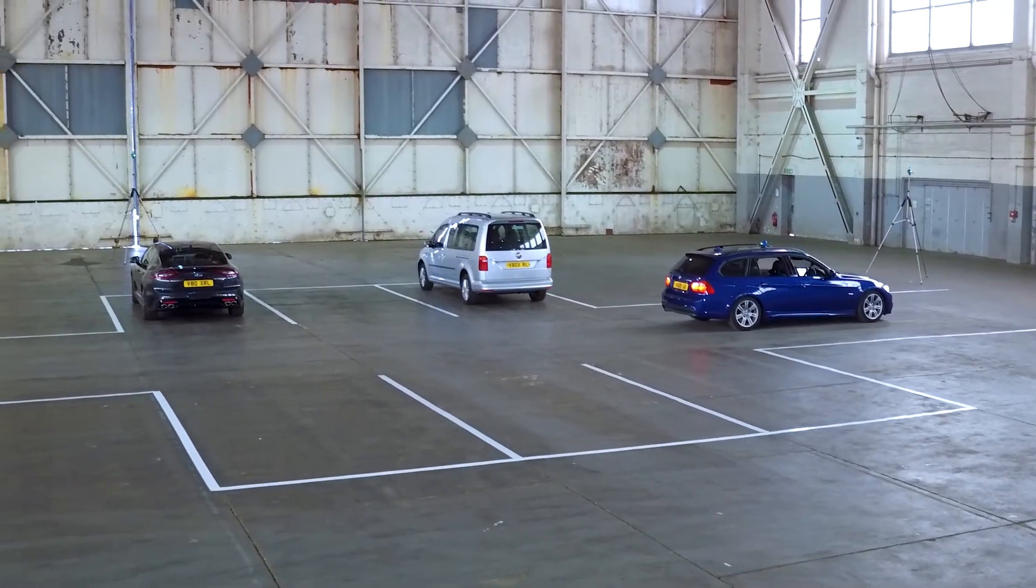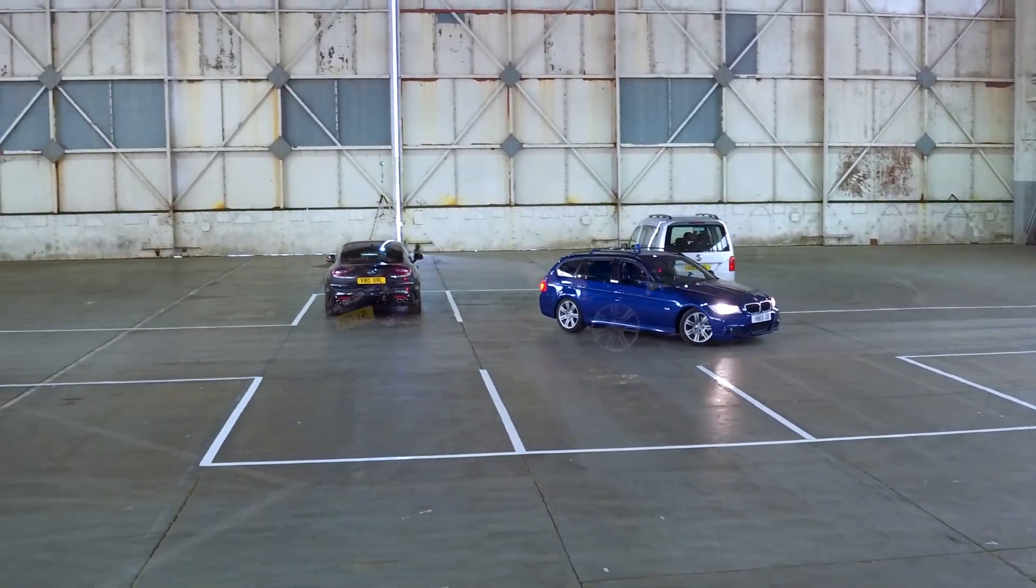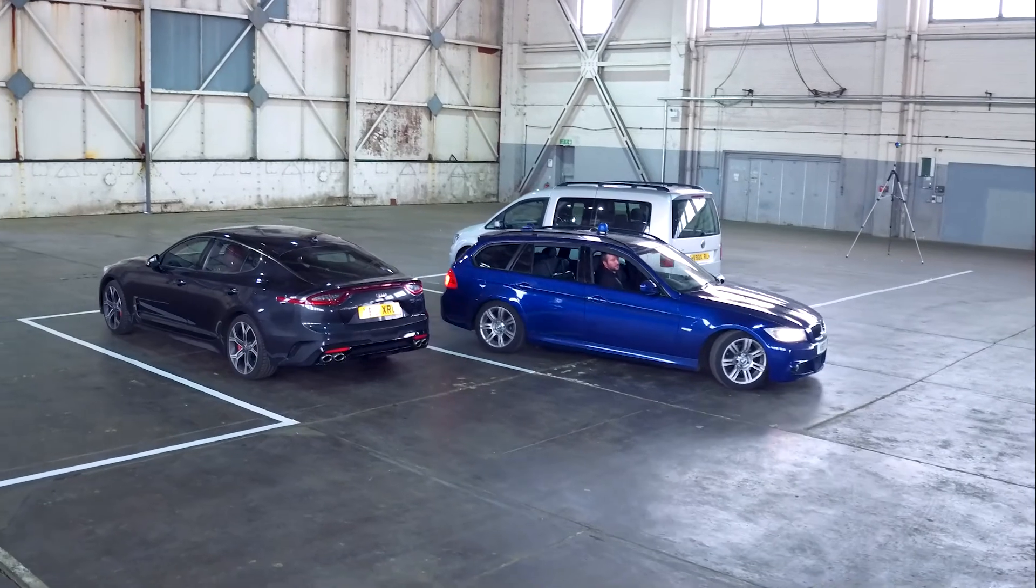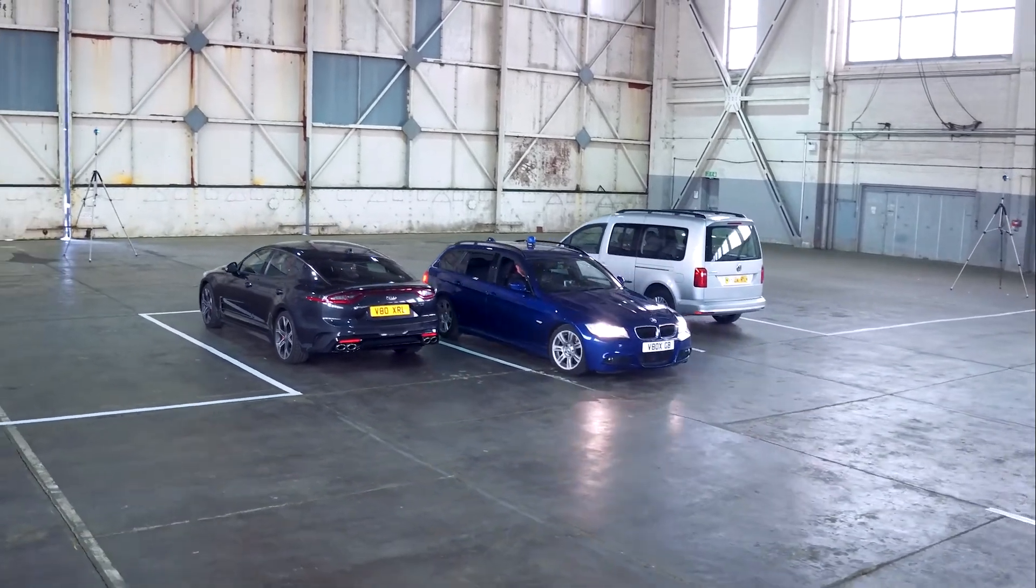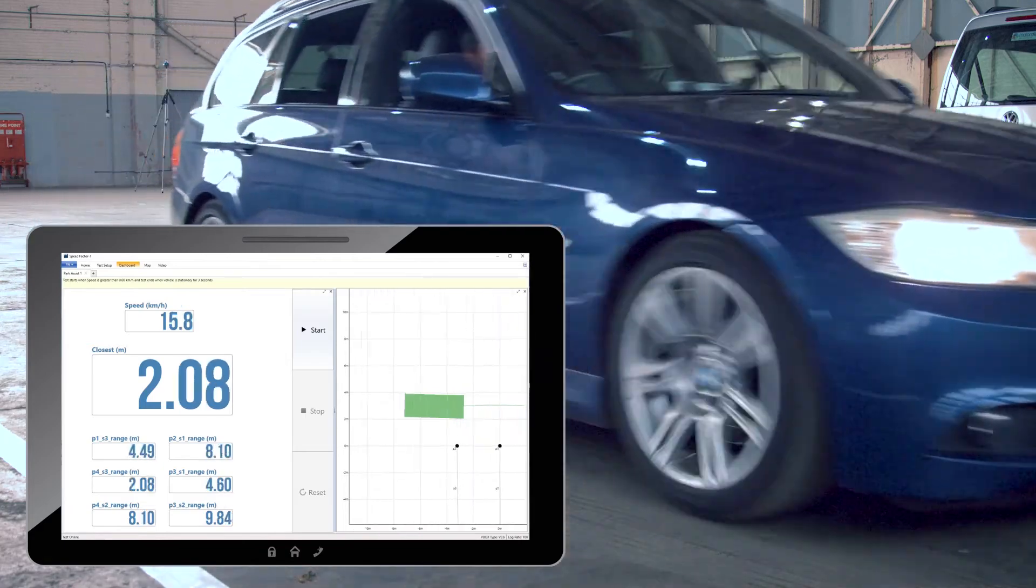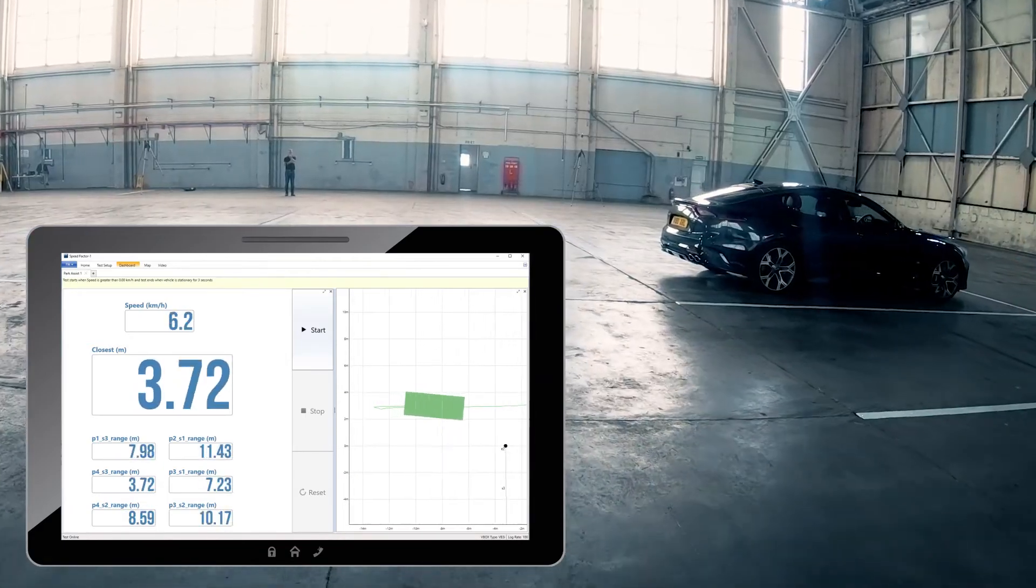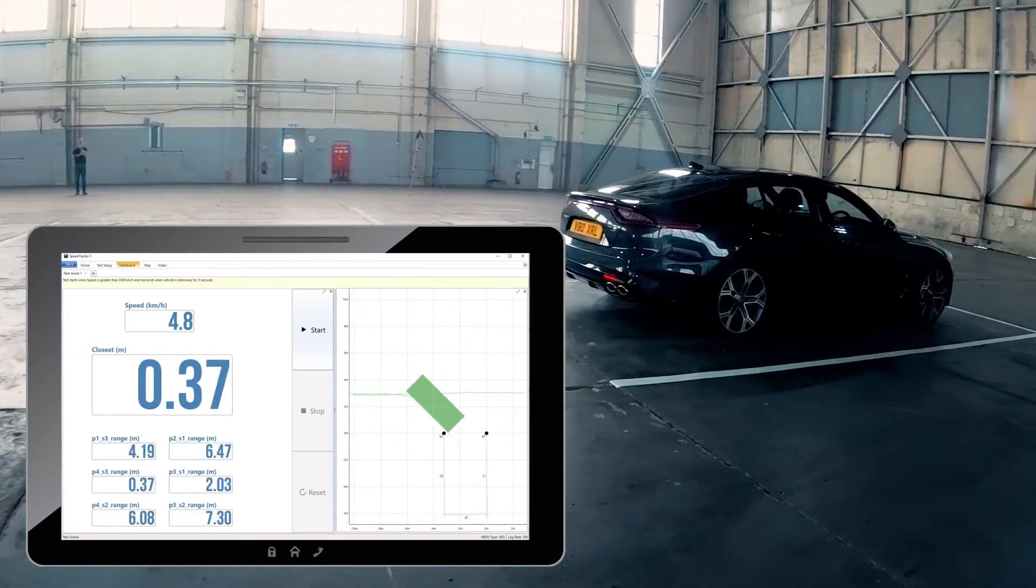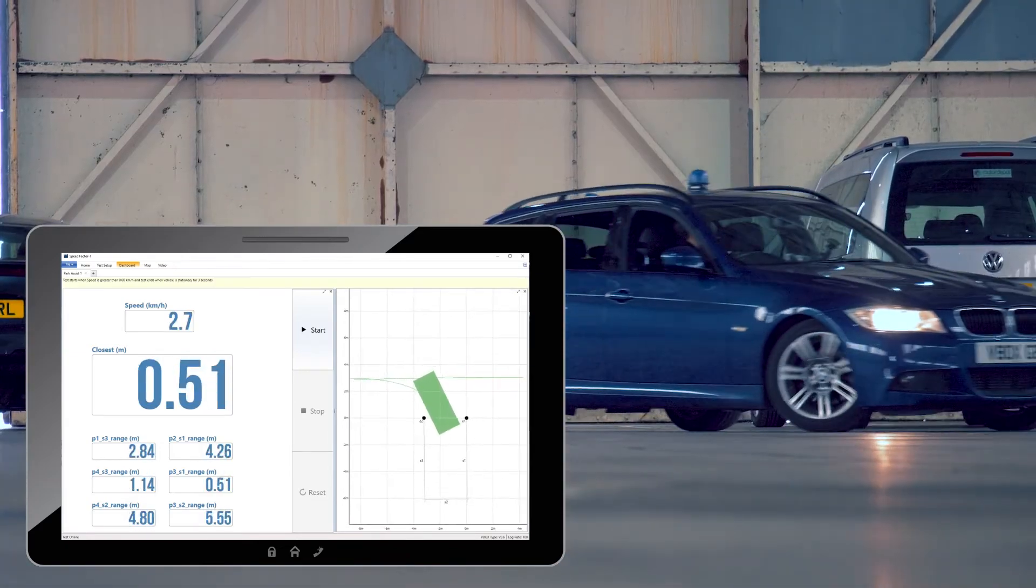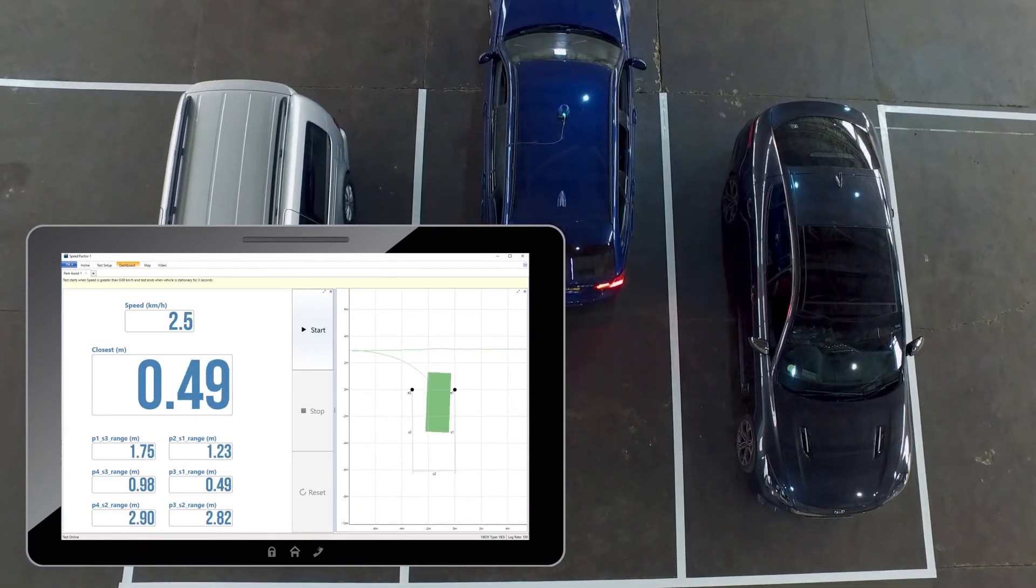You can now begin testing with the Vips beacons, relaying accurate positional data to the test vehicle in place of GPS. Using VBox Test Suite in online mode, the distance from the mapped vehicle overlay to the surveyed parking bay can be viewed in real time, with the closest point of contact shown to within 2cm accuracy.